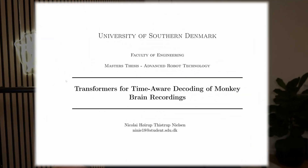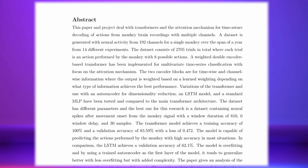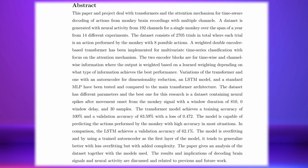Here we have my math thesis. It's about transformers for time-aware decoding of monkey brain recordings. I already have another video where we go into the technical details if you're interested. First of all, we have the front page — nothing really special about that. Then we have the abstract here, which is a bit longer than half a page, which is a pretty good length. The abstract is basically just to introduce readers to what you're going to work on in the project, your requirements, and some of the most important results.